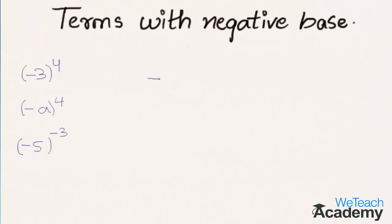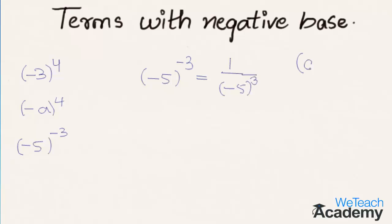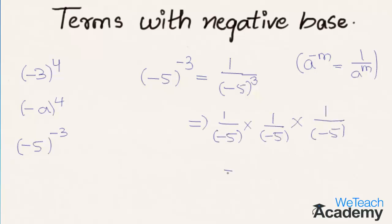The last example is minus 5 raised to the power minus 3, which can be written as 1 by minus 5 raised to the power 3, since a to the power of minus m equals 1 by a power m. Simplifying, this is 1 by minus 5 multiplied by itself 3 times. As the power is odd, we get the result in negative, that is minus 1 by 125.